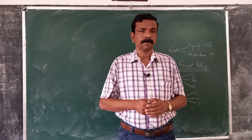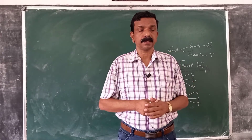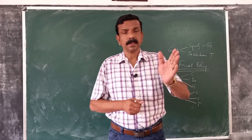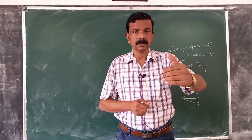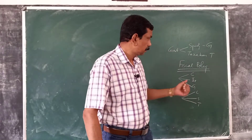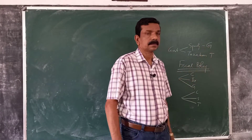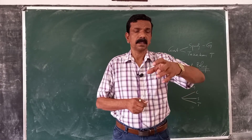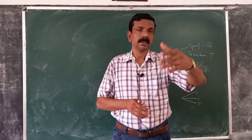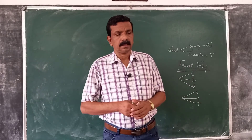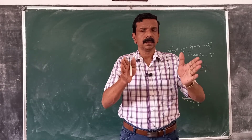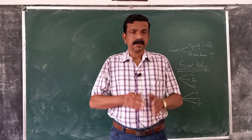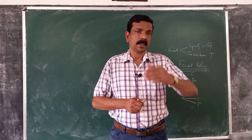In the Keynesian model, as the level of income and output depends on aggregate spending, government can increase or reduce output and income through its spending and taxing policies. Stated differently, fiscal policy can be used to influence the level of economic activity — that is, the level of income and output.